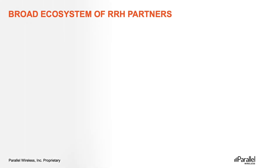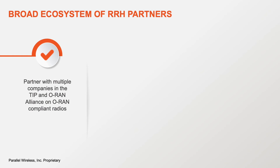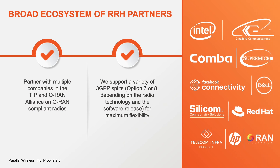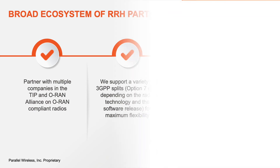Parallel Wireless's all-G OpenRAN solutions have interoperated with a broad ecosystem of RRH and COTS-based partners. We partner with multiple companies in the TIP and ORAN alliances including Comba, KMW, and the Facebook Evenstar project. We support a variety of 3GPP splits — option 7 or option 8 — depending on the radio technology and software release for maximum flexibility. Our solution is agnostic to COTS-based hardware offerings from Dell, Silicon Limited, Supermicro, and HP, to name a few.